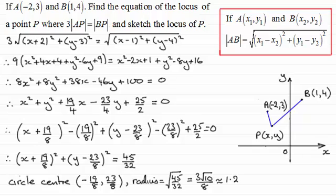We've got a circle with this as our center and with a radius of roughly 1.2. Marking that on, we end up with this as our sketch. This is our circle, and that is the locus of P.